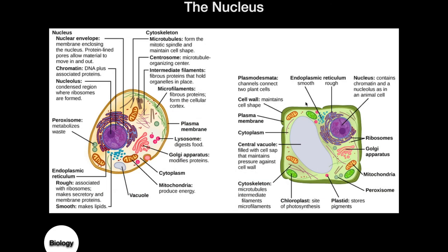The nucleus — remember all of these organisms are going to have nuclei because we are talking about eukaryotic cells. The nucleus is going to be the control center of the cell and the location where we find our genetic material, the DNA. Inside the nucleus you'll see a dark region called the nucleolus, where ribosomes are made. Notice that the nucleus has a membrane around the outside called the nuclear membrane.